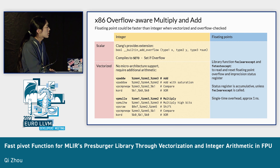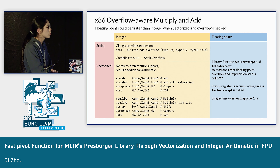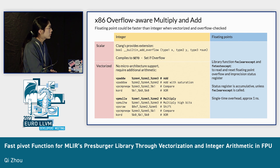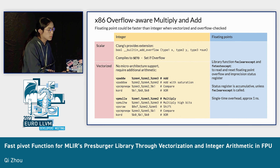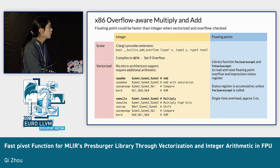In x86, there is an instruction to indicate whether the previous integer add or multiply instructions have gone overflow or not. But it only works for scalar instructions — for vectorized instructions, there isn't such an instruction, and we have to manually check if there is an overflow or not.